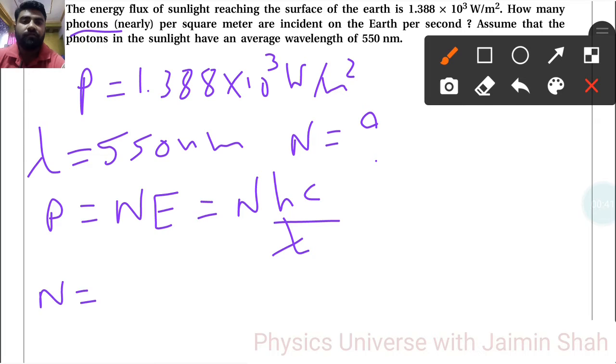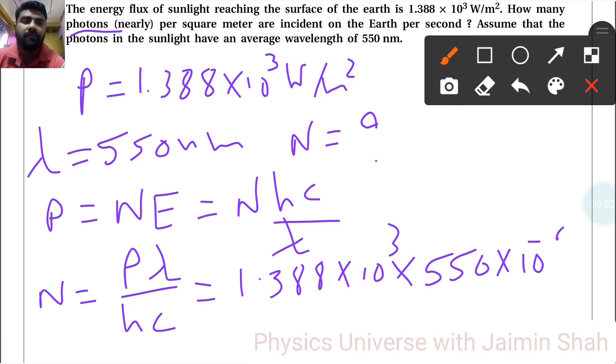So N = P × λ / (hc). P is 1.388 × 10³, times λ which is 550 × 10⁻⁹, divided by h which is 6.63 × 10⁻³⁴, and c is 3 × 10⁸.